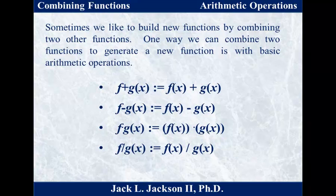Think of this as a little factory. You walk in with an x, and the first thing they do is make a copy of it. One copy goes to the f assembly line, the other goes to the g assembly line. Each does their thing independently and produces their output — f of x and g of x. Then there's one more person at the end who takes both outputs and simply adds them together to give the final output.